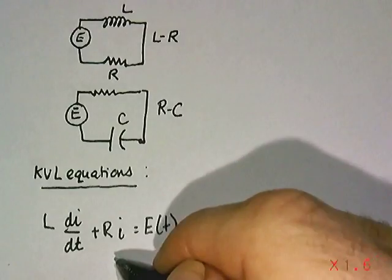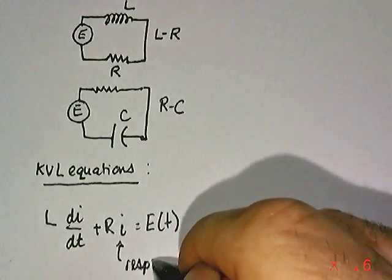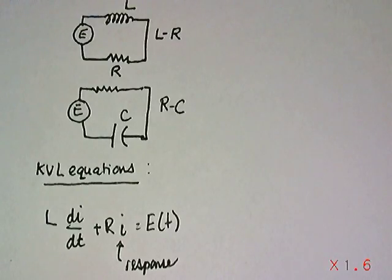Sometimes this current here, I, is called the response of the system. That's common in circuits, which many of you will probably take in 301. You'll talk about the response of the system in terms of that particular parameter. So that's a differential equation involving the current, but it's based on the conservation of voltage through the system. That's one particular equation that's useful for LR circuits.